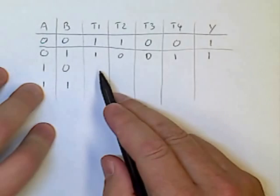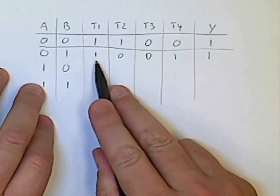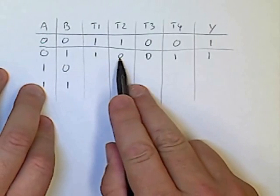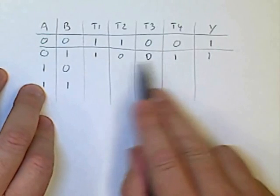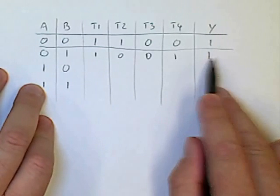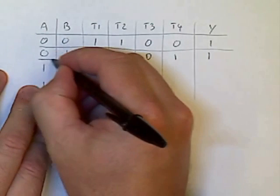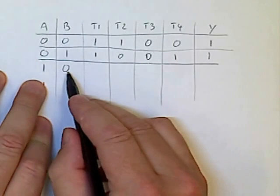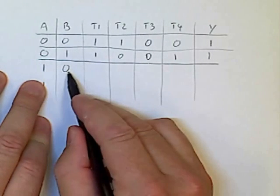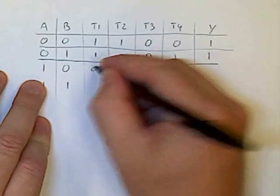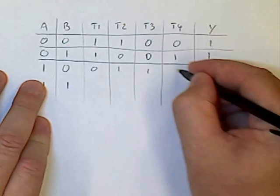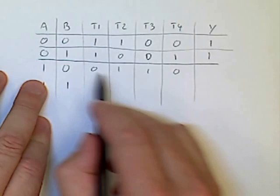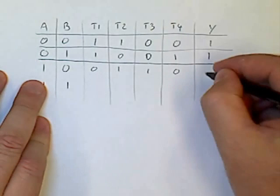So if one of either T1 or T2 is high, and one of T3 or T4 is low, then the output is going to be high. And conversely, we'll see the same effect here. If we've got zero, one, one, zero, then one of these is high, and one of these is low, so the output must be high.